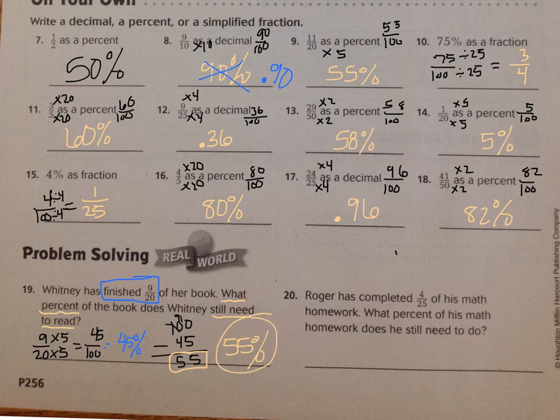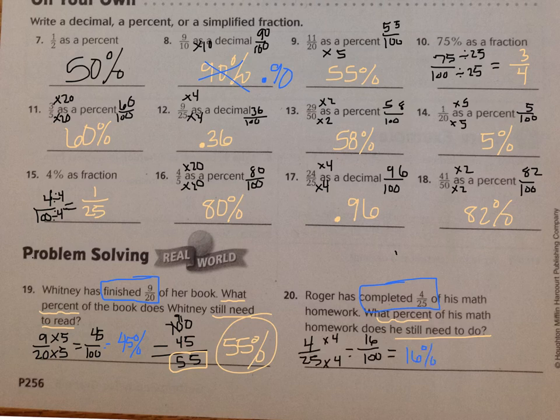Number twenty is similar. They want to know what percent is still needed to do, but they told you that four twenty-fifths was completed. So you should have found four twenty-fifths as a percent, which equals sixteen percent, and then found the missing portion to add up to a hundred, which is eighty-four percent. So he still has quite a bit of his math homework to work on.